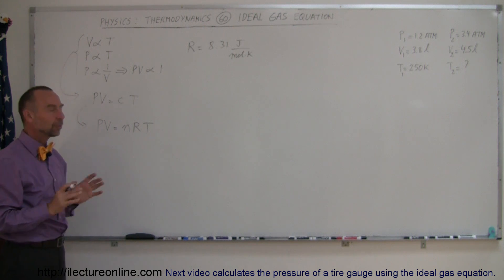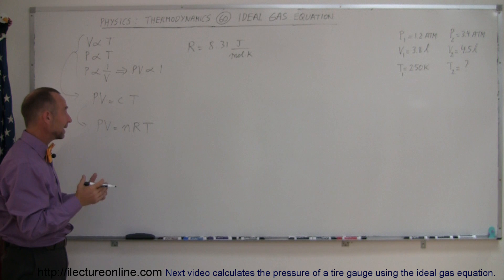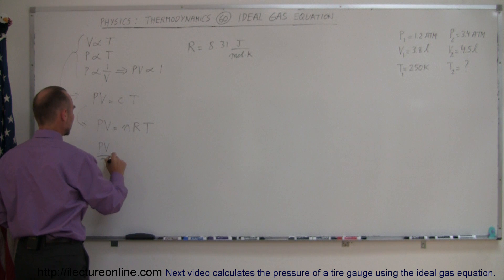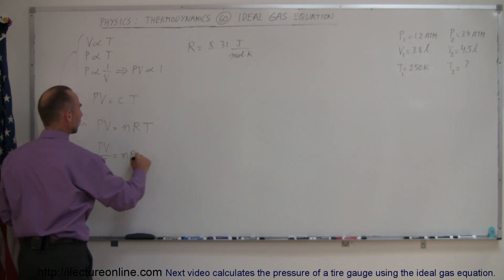And so now we're able to relate the gas in one state to a gas in another state. Now, since n and R would be constant in any given example or any given sample of gas, we can then say that PV over the temperature is equal to nR, is equal to a constant.